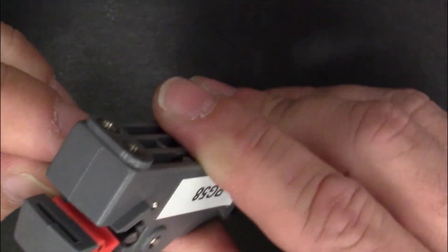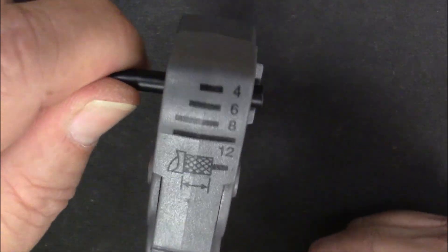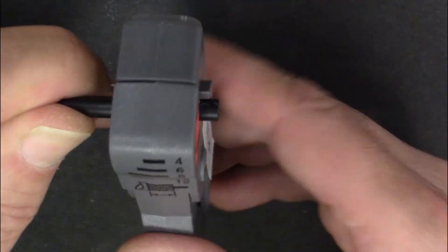Insert the cable into the stripping tool as shown. Rotate the tool 4 to 5 times. Remove the cable from the stripper.